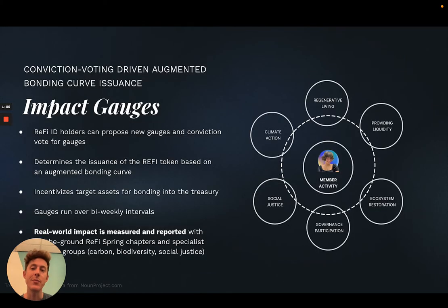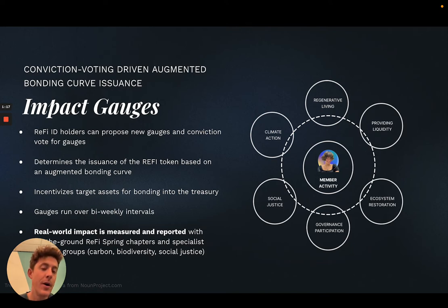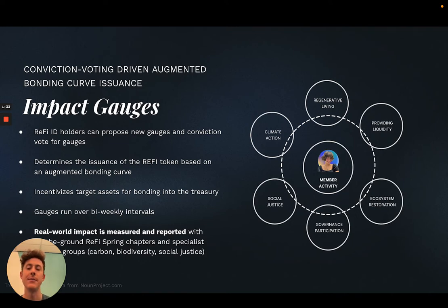The second primitive is impact gauges, which are effectively conviction voting-driven augmenting bonding curves that determine the issuance of the community's currency — in this case, the Refi token. ID holders can propose specific gauges which will incentivize on-chain actions, and others can place conviction votes of Refi tokens on those gauges to determine which on-chain activities should be incentivized and allow people to earn Refi tokens by an impact score.